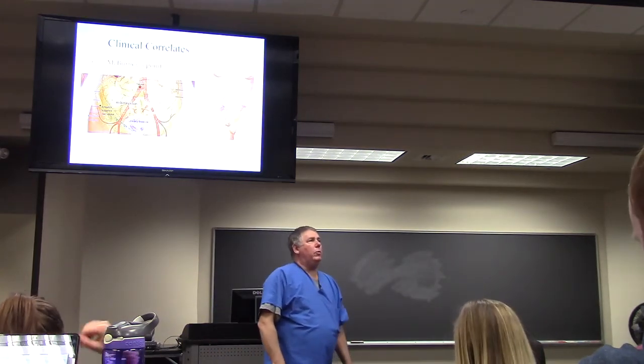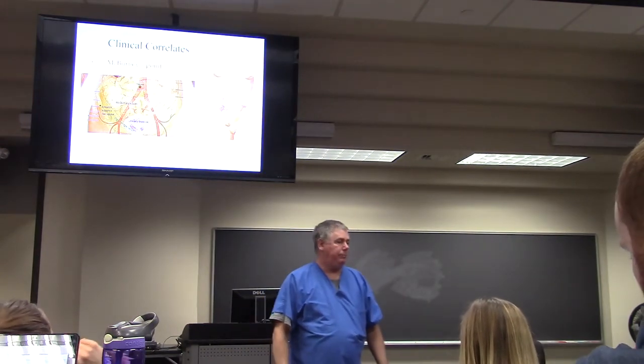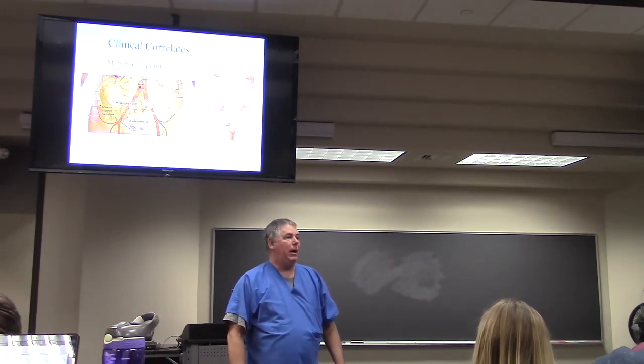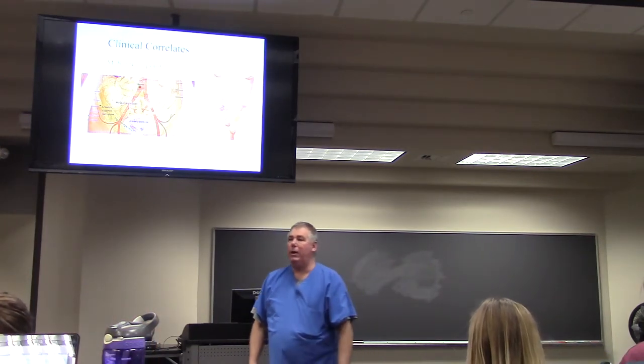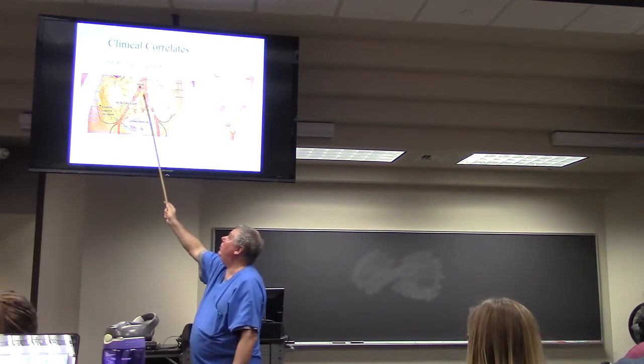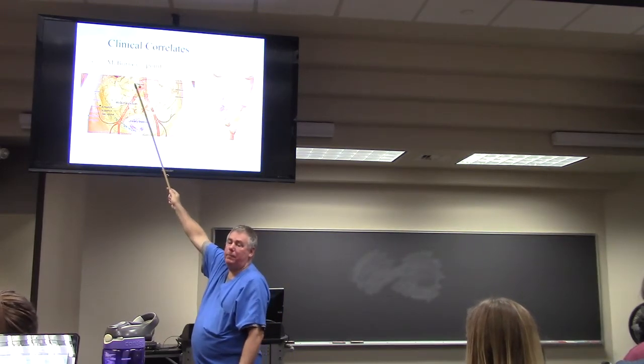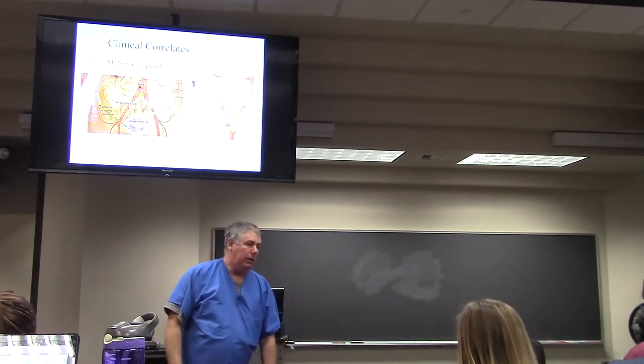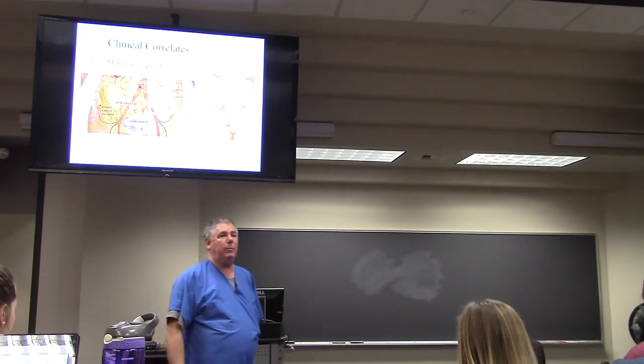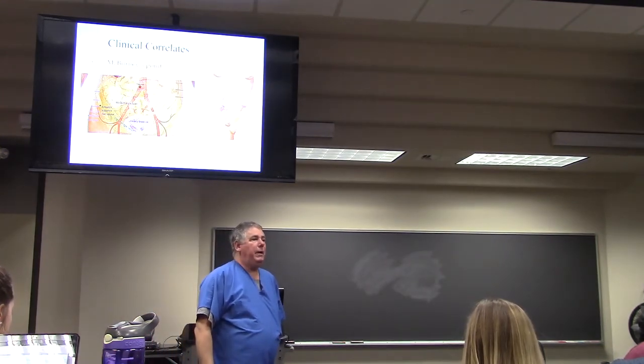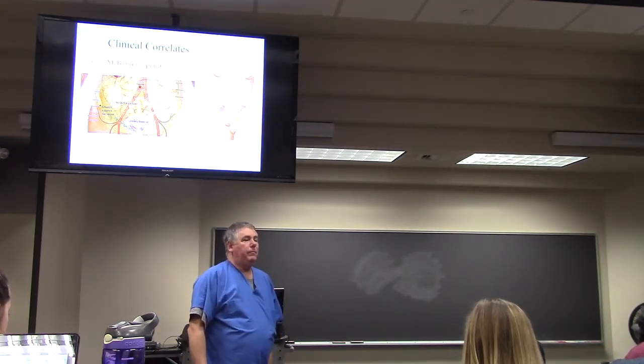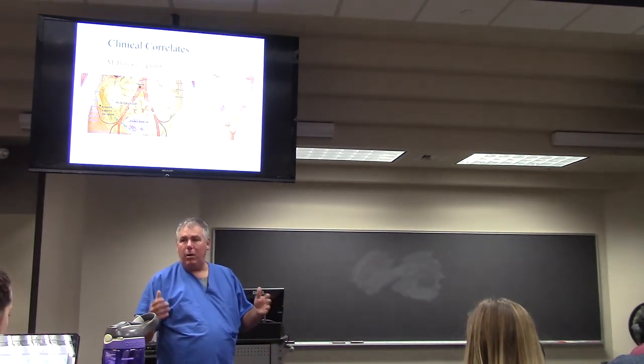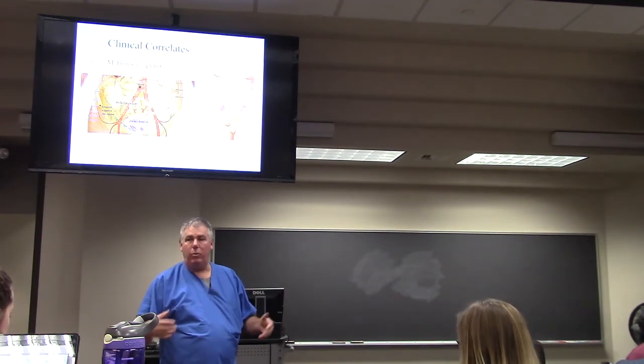Now a couple of clinical correlates here. McBurney's point is important when you're dealing with appendicitis. Appendicitis starts out as periumbilical pain. In other words, peri-around the belly button. And then when that inflamed appendix starts irritating the peritoneum, the parietal peritoneum, it becomes localized. The visceral peritoneum and the gut are all visceral. You don't feel that.